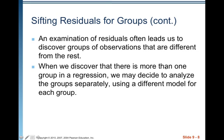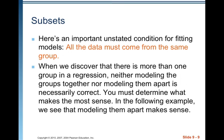An examination of the residuals often leads us to discover groups of observations that are different from the rest. When we discover more than one group in a regression, we may decide to analyze the groups separately using a different model for each group. An important unstated condition for fitting models is that all the data must come from the same group. When we discover more than one group, neither modeling the groups together nor apart is necessarily correct — you must determine what makes the most sense.